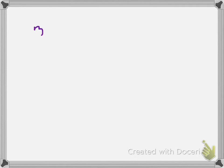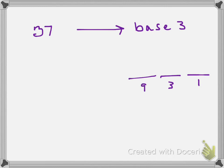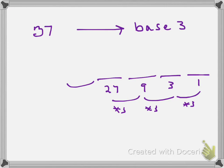So let's take a number — let's say we have the number 37, and this is in base 10, and we want to convert that to base 3. I ask myself: I have the 1s, 3s, 9s, 27s. To get to the next place value I multiply by 3, just like in our number system we multiply by 10. So the next one would be 81.